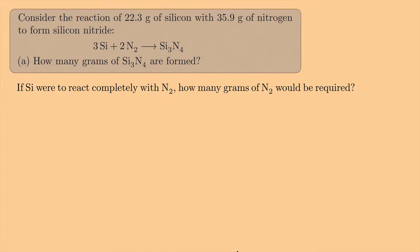First, ask the question: if the silicon were to react completely with the nitrogen, how many grams of nitrogen would be required? I could have done this the other way around — if nitrogen were to react completely with the silicon, how many grams of silicon would be required — it doesn't matter. You just have to pick one and react it with the other to see what happens. In this case, I'm going to react the Si with the N₂ and see how many grams of nitrogen I would need. If I get something less than 35.9, then I know I'm going to run out of silicon first. If I get something more than 35.9, that means I'm going to run out of nitrogen first.